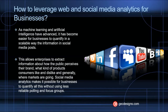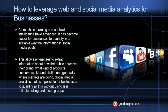The analysis of data available on those platforms is more of a struggle. The main reason is that data is available in text format — particularly free text and natural language — the kind of unstructured data that analytical algorithms have traditionally struggled with. However, as machine learning and artificial intelligence have advanced, it has become easier for businesses to quantify, in a scalable way, the information in social media posts and comments. This allows enterprises to extract information about how the public perceives their brand, what products consumers like and dislike, and generally where markets are going.